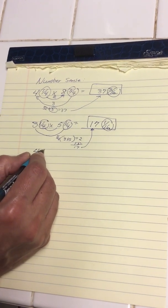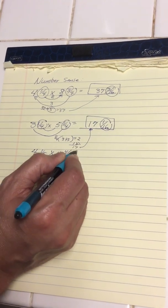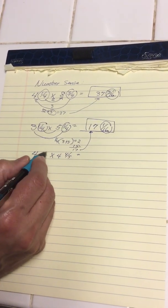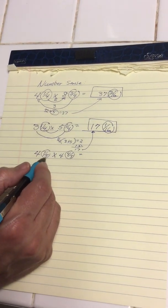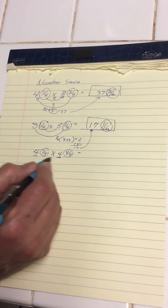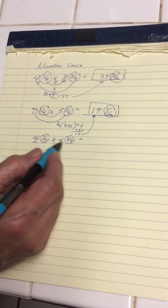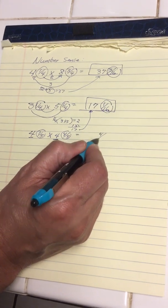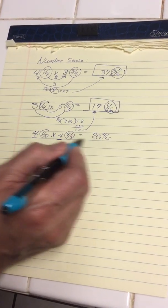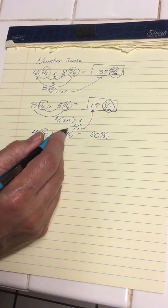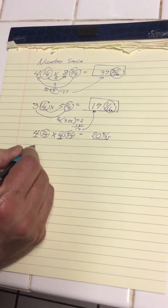What about a problem like four and one-fifth times four and four-fifths? You may recognize that one-fifth and four-fifths add up to one, and the whole number part is the same. That's a special shortcut. Multiply one-fifth times four-fifths to get four twenty-fifths. Then four times five is twenty, so we add one — the answer is twenty and four twenty-fifths.